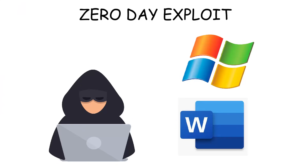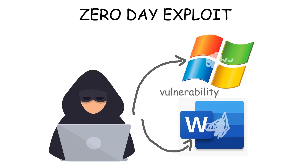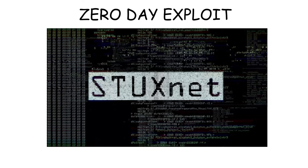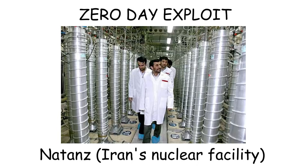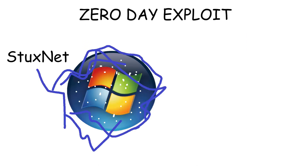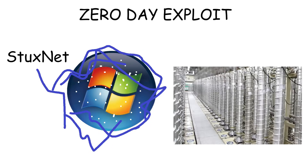Zero-day exploit. A zero-day exploit occurs when hackers exploit an unknown vulnerability in software or an operating system, and no fix exists until the developer releases a new patch. In fact, there was a zero-day exploit called Stuxnet Worm in 2010, which targeted Iran's nuclear facilities. Stuxnet utilized flaws in the Windows operating system and industrial control software, causing centrifuges to spin out of control and break.